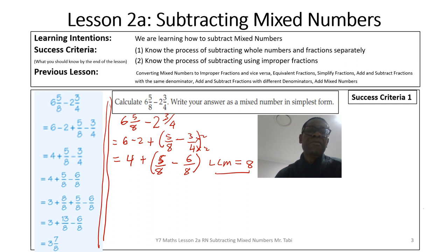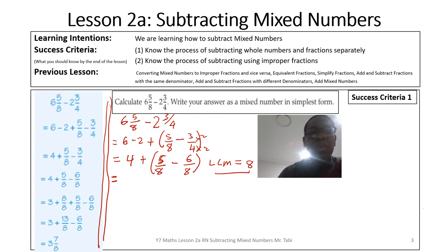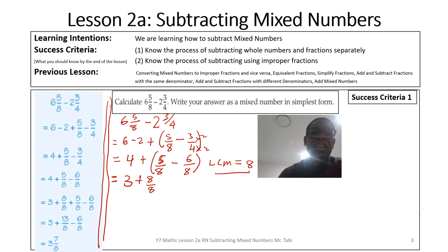We can see we're not going to be able to subtract six from five — that would give a negative answer, and we want to avoid that. So we need to be strategic here and borrow one from the four, leaving us with three. The one we borrowed — because the denominator for the fractions is eight — we write it as eight over eight. So we now have three, plus eight over eight, plus five over eight, minus six over eight.